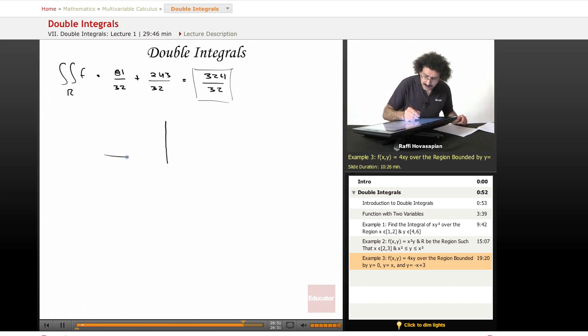So let me draw the domain again. So we had that, and we had this. Okay, so this was 3. This was 0. We had 3 halves here. This was 3. This was y equals x, or if I wrote it in terms of x, x equals y. Okay, this graph right here, that's the y equals minus x plus 3. If I write it in terms of x, it's x equals 3 minus y.